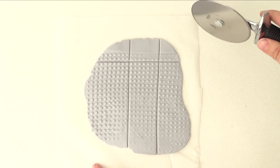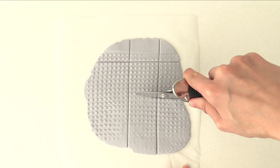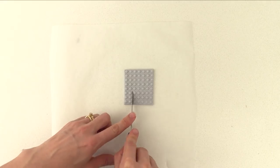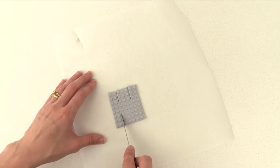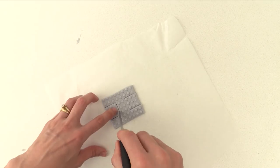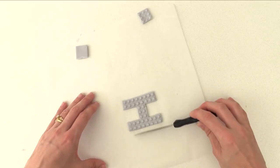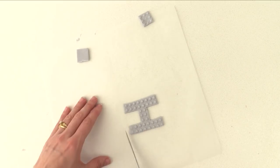Take some more light grey fondant and use the texture mat to make an impression. Then using a pizza cutter, cut out a 7 by 8 rectangle. Then cut out a section from the top and the base to make the letter for the helipad. Then use the side of your knife just to straighten up the sides because lego doesn't bend.